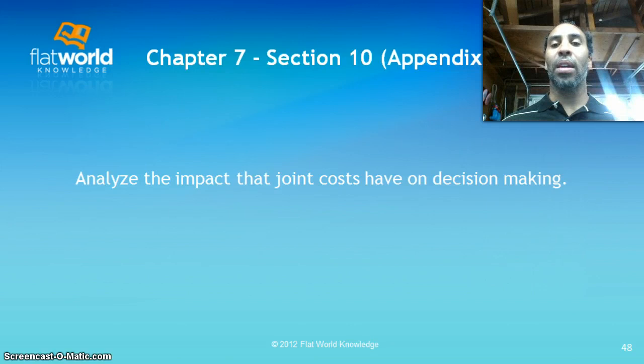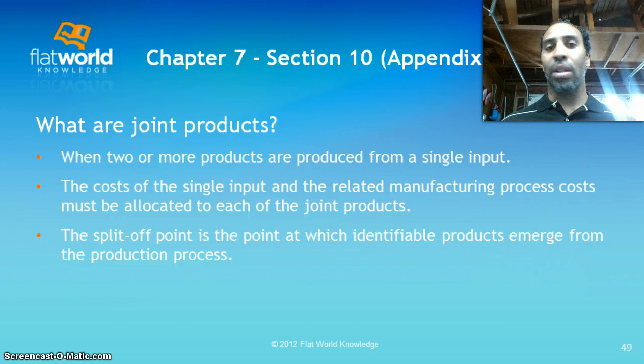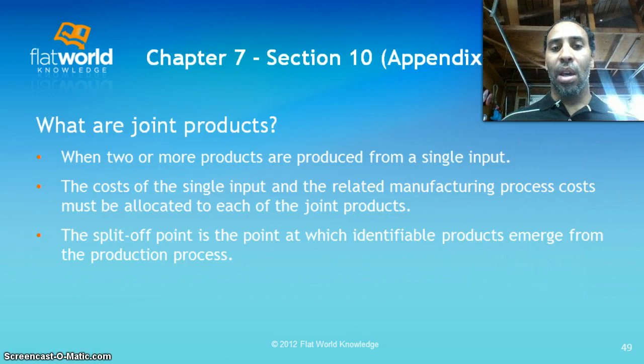Next is analyzing the impact that joint costs have on decision making — this is in the appendix, so focus less time on it relative to the earlier material. Joint products arise when two or more products are produced from a single input. For example, a company that logs trees might make both desks and skateboards from the same wood — a single input producing different products. The cost of that single input and related manufacturing process costs must be allocated to each of the joint products.